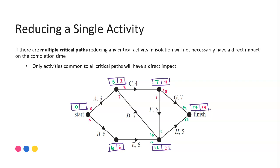In the case where you have multiple critical paths, reducing any single activity in isolation may not have a direct impact on the overall completion time. What you need to be looking for — if there are multiple critical paths — is the activities that are common to both or all of those paths, and they will be the ones that do have an impact.